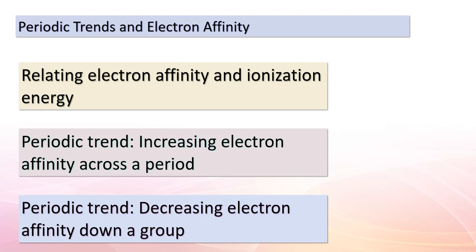Now that we've grasped the fundamental aspects of ionization energy, let's explore the connection between electron affinity and ionization energy. As we move across a period, electron affinity tends to increase. Conversely, as we journey down a group, electron affinity usually decreases. But there are exceptions — these irregularities often stem from the electron configuration of elements, as the arrangement of electrons in an atom's orbitals significantly influences its behavior.